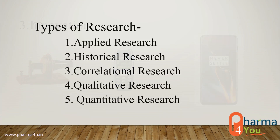Types of research. 1. Applied research: Applied research means a scientific study to solve practical problems. 2. Historical research: Historical research studies the meaning of past events in an attempt to interpret the facts and explain the cause of events and their effect on present events.